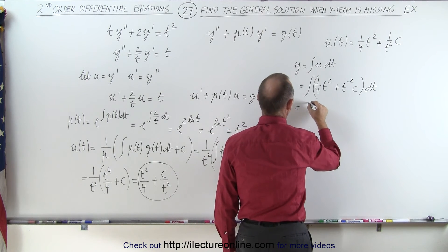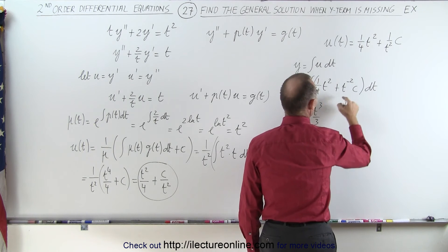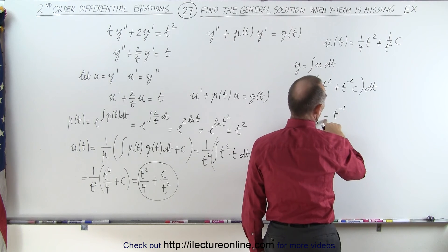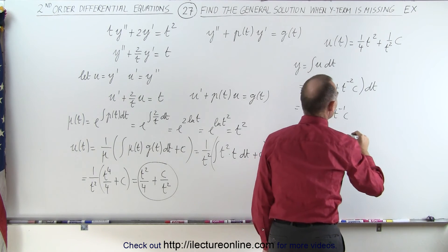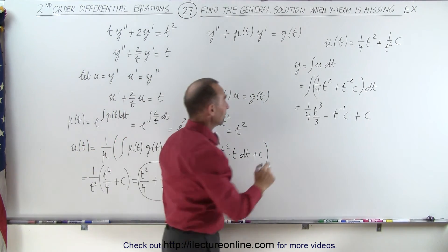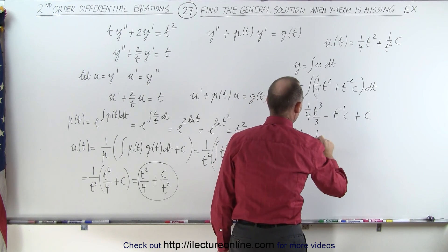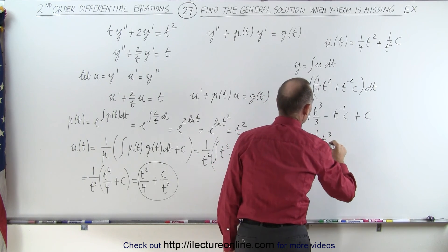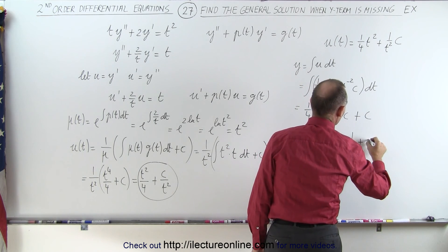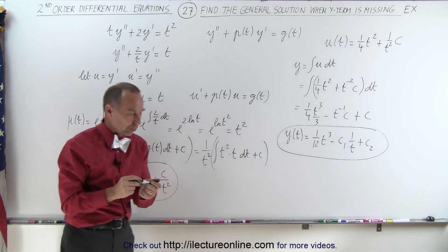Now we'll integrate that. This is equal to one quarter times t cubed over 3, and this would be minus t to the minus 1 over negative 1, giving us negative 1 times c, plus another constant of integration. Finally, when we put it all together, the function y we're looking for is equal to one twelfth t cubed minus c1 times 1 over t plus c2. And there's the general solution to the original second order differential equation.